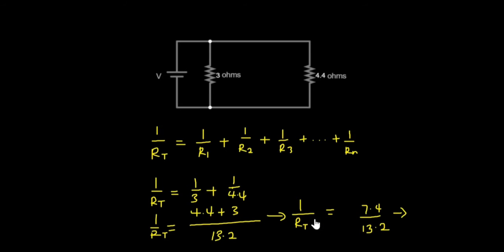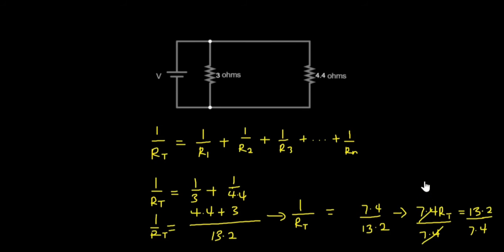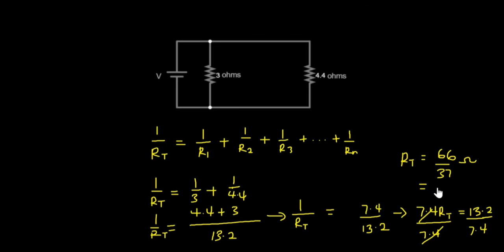Doing cross multiplication: R_total times 7.4 equals 13.2. Dividing both sides by 7.4, the equivalent resistance equals 13.2 divided by 7.4, which equals 66 divided by 37. Converting to decimal, that is approximately 1.78 ohms. So the equivalent resistance for this circuit is 1.78 ohms.